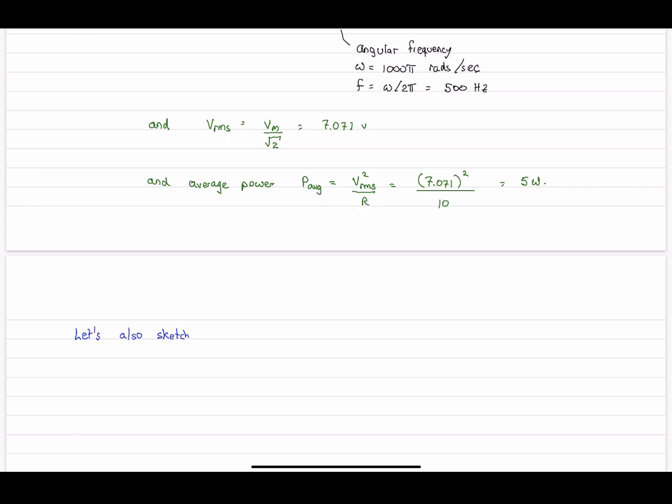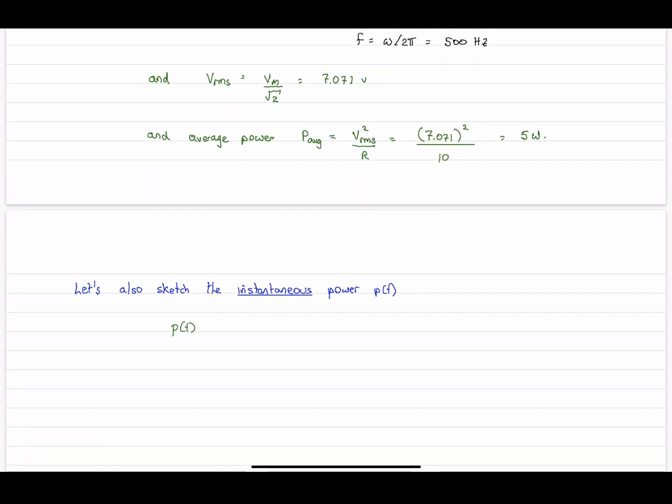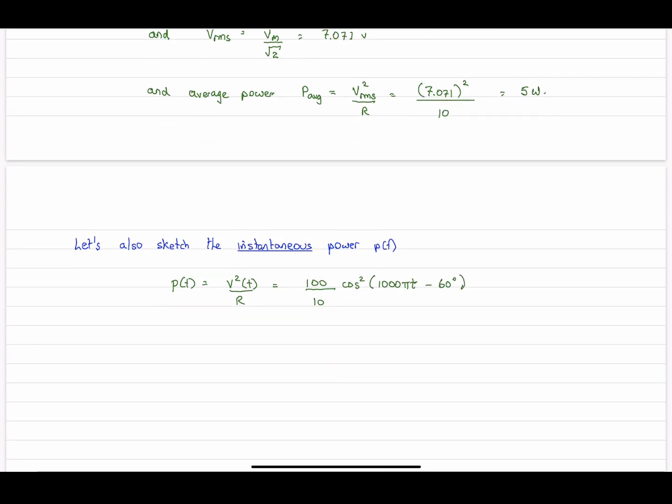Now let's get an idea of what this average power looks like in terms of the instantaneous power. Because the power is changing all the time because the voltage and the current are sinusoidal. So ultimately it's the average we're interested in, but let's get an idea of what this looks like. So here's our expression for instantaneous power, which is just simply V²(t) over R, which comes from voltage times current.